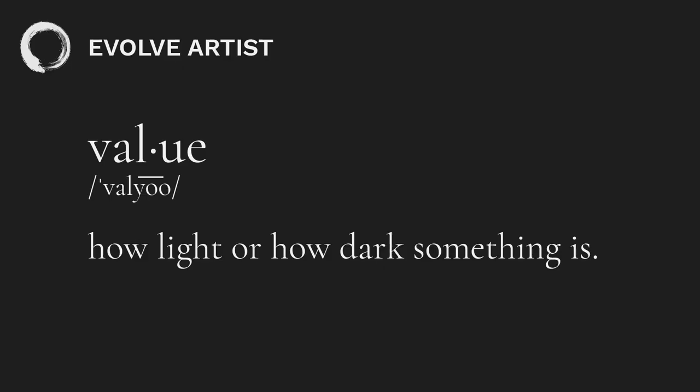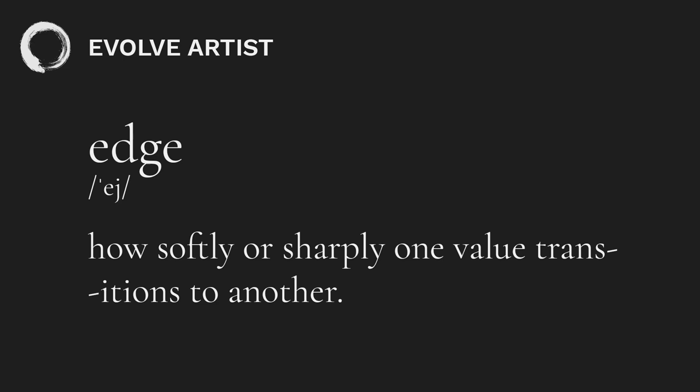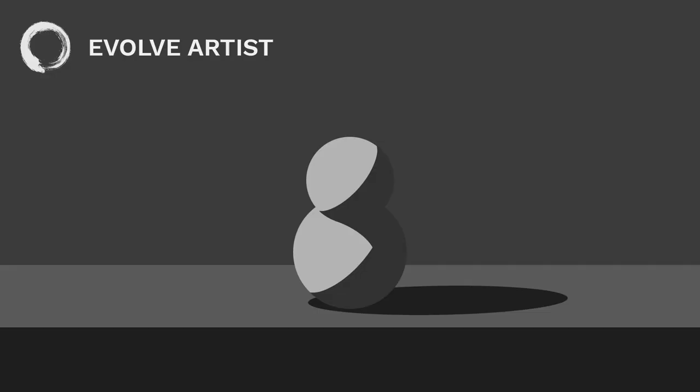Before I define edges, we need to know what values are. Values are how light or how dark something is, and an edge is how softly or sharply one value transitions to another. So in this image, we have all of our values — but how come it still looks flat? Without edges, you won't have a clear explanation of the three-dimensional form of the object you're looking at. But with edges, that illusion of form and depth becomes lifelike.